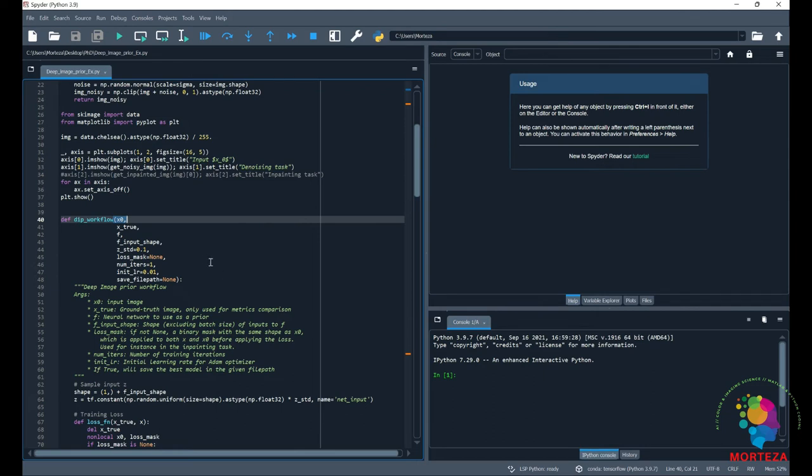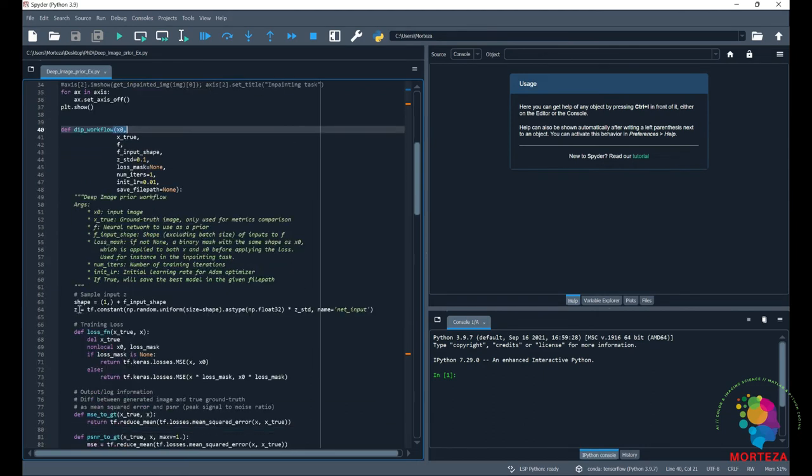and F is the input to the network. But because X0 is the only information that the network has, sometimes it is referred to also as input. So this is where Z is randomly made, and the ZSTD stands for the standard deviation that is used to generate Z.